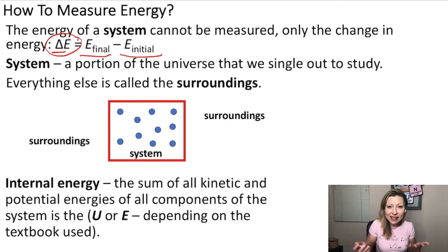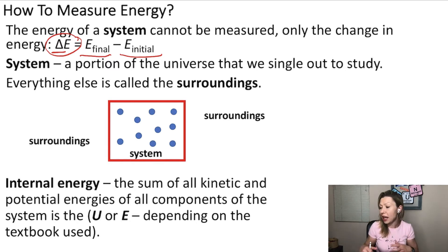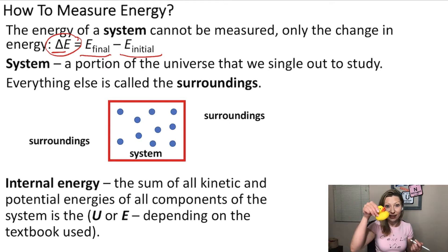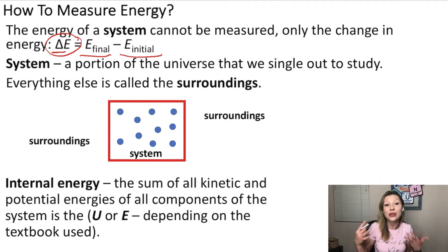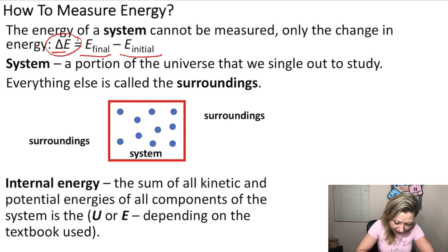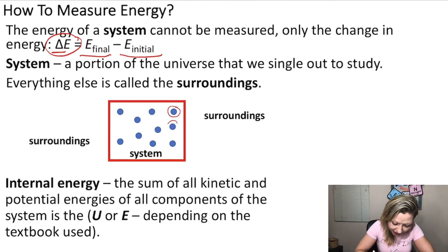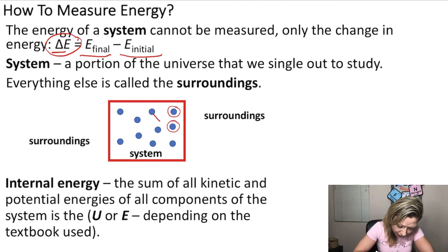What is a system? A system is simply a portion of the universe that we single out to study. A system can be my pen, a system can be this little rubber dot that I have here, a system can be anything that I would like to study. Here on this slide, the system is simply defined by this red rectangle and the blue dots inside are gas atoms, and they actually move around with some velocity inside this system.